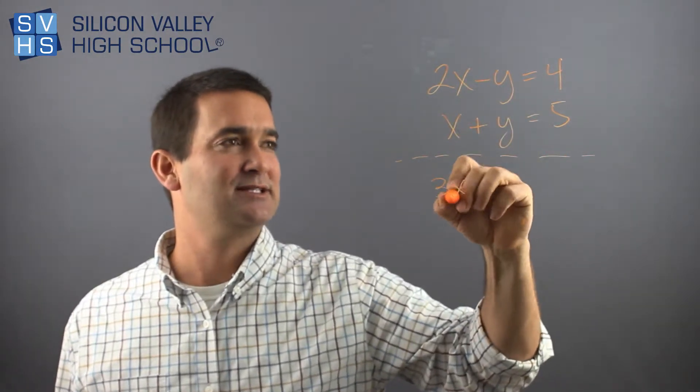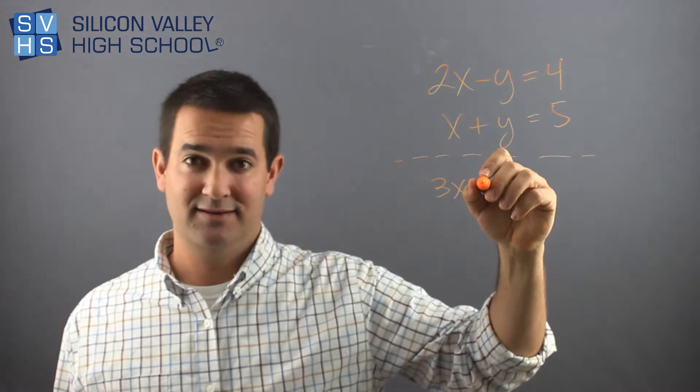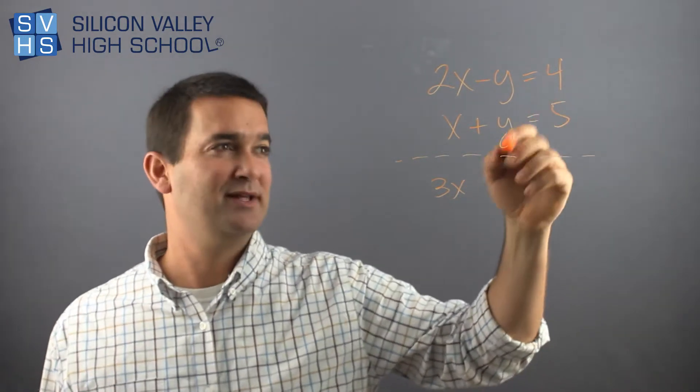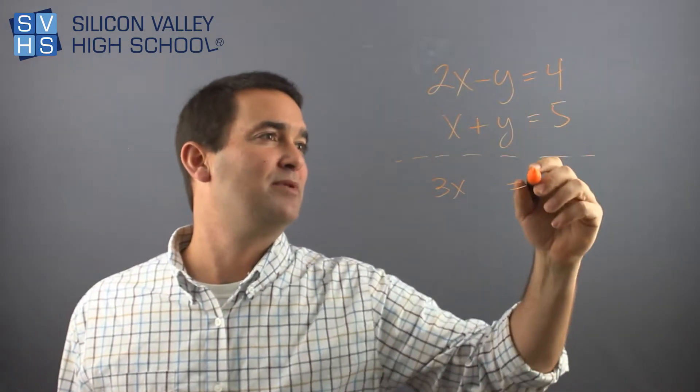2X plus X is 3X. Negative Y plus Y is gone. I could put plus 0, but that's pointless. And then equals 4 plus 5 is 9.